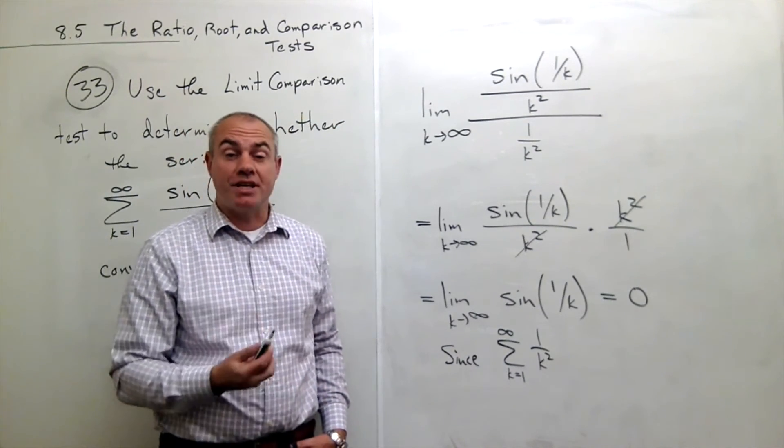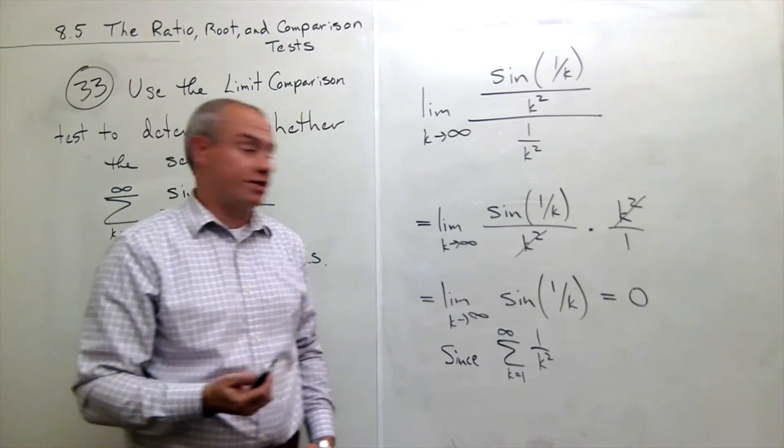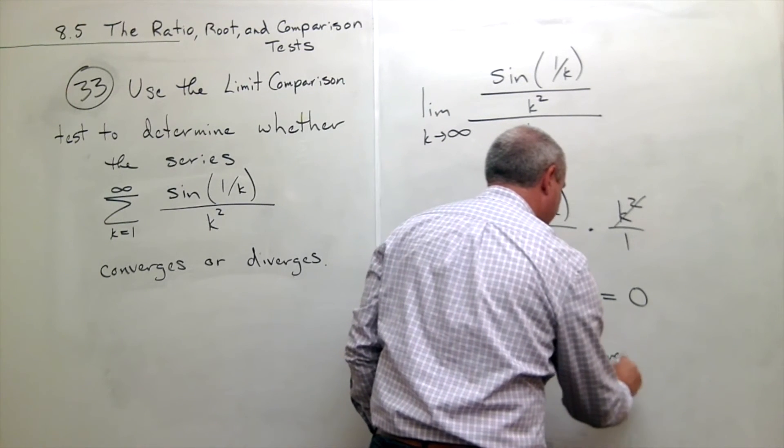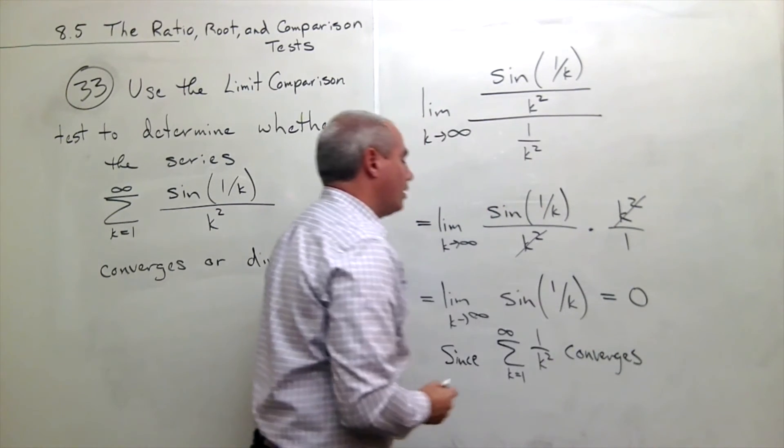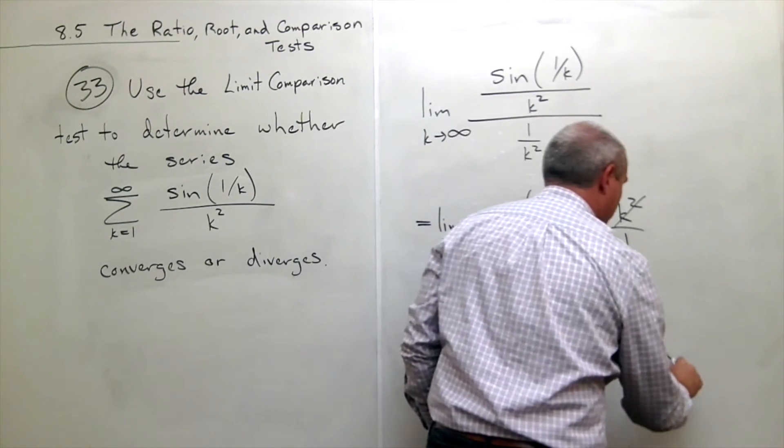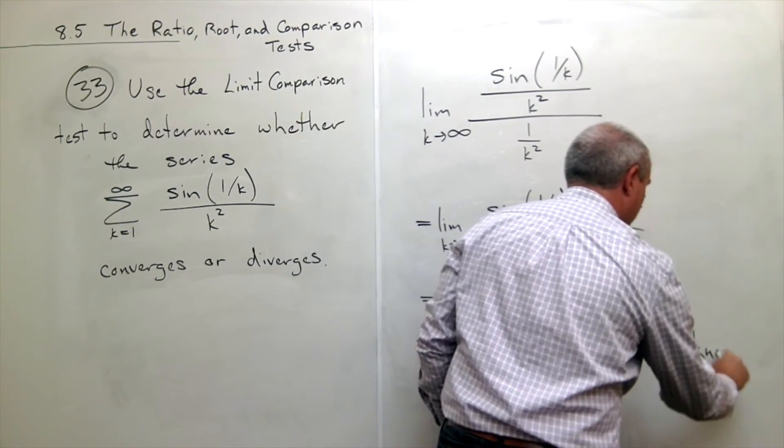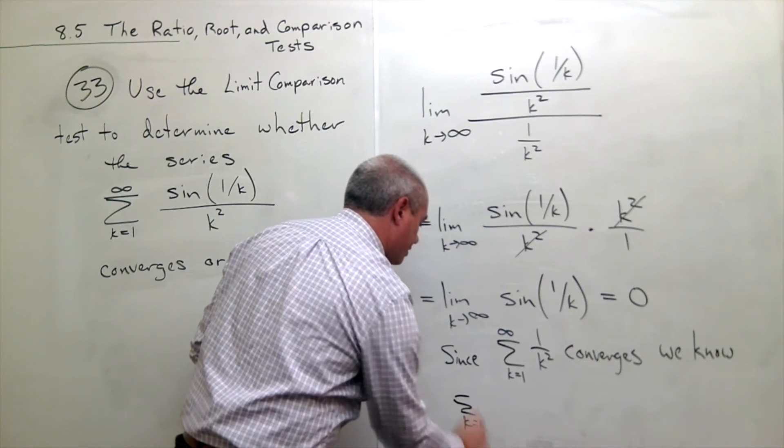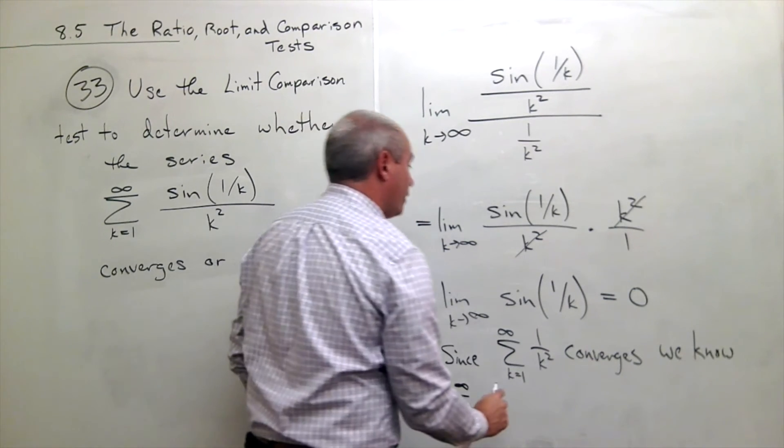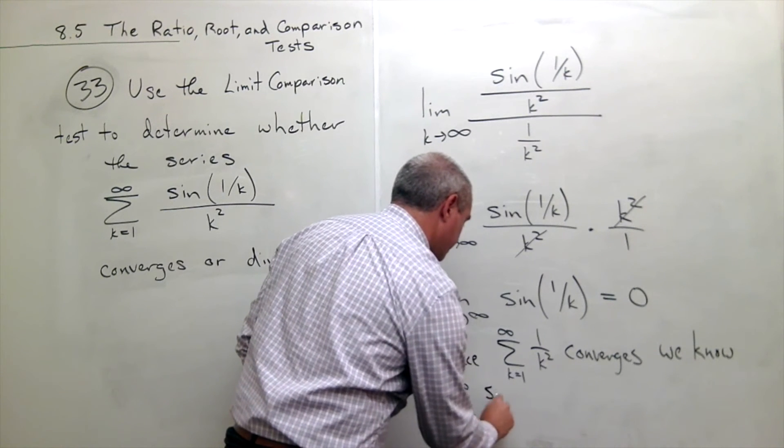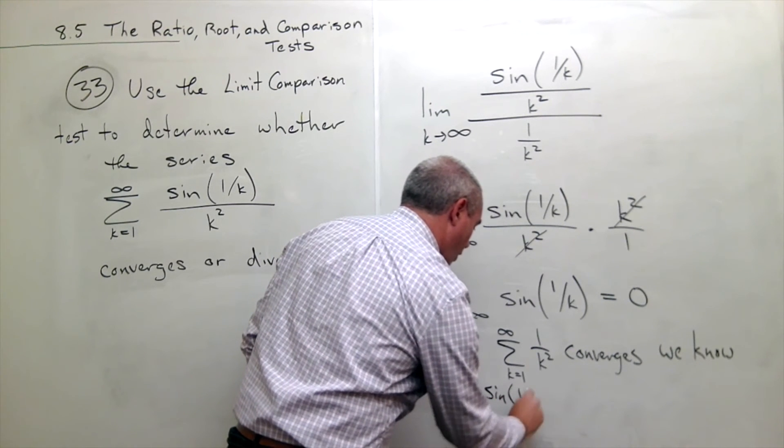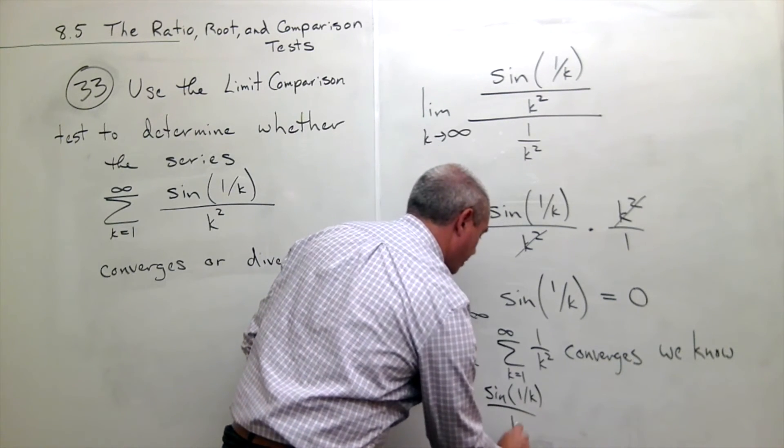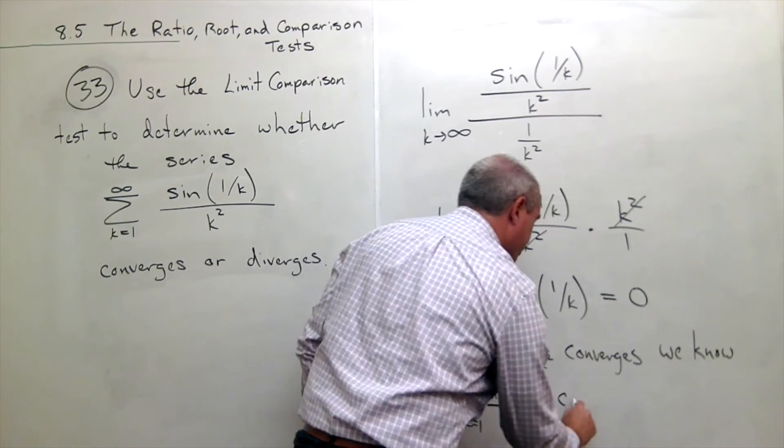Since this guy converges, we know that also the sum k going from 1 to infinity of sine 1 over k divided by k squared converges.